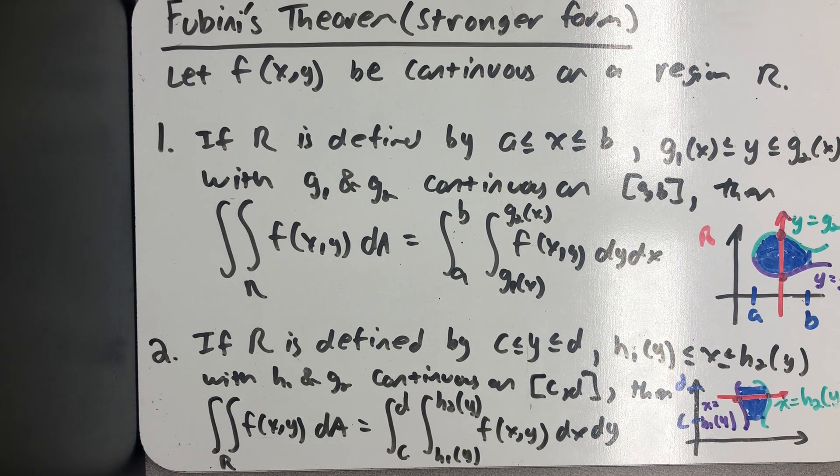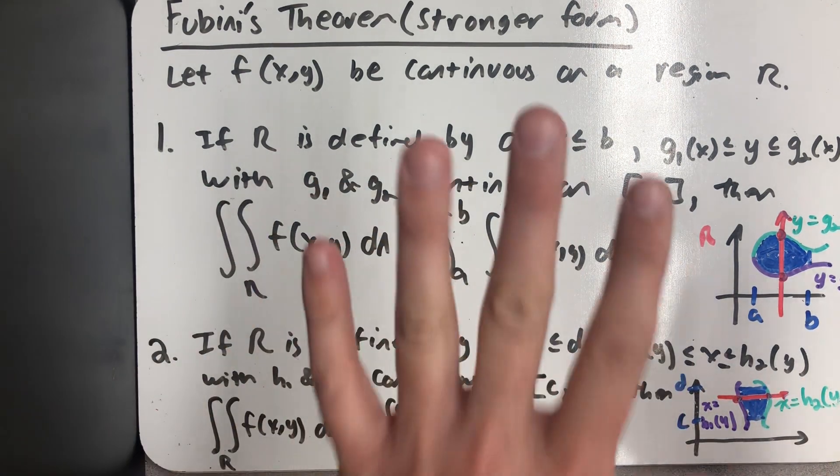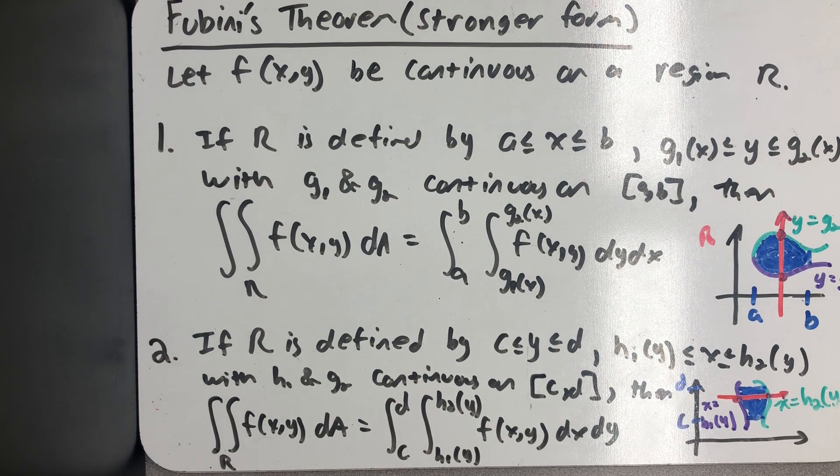Later on, we might have more complicated regions where I'd have to break them apart and do different integrals and add the results using a property called additivity. But we'll see that later on as well. For now, here's an example.